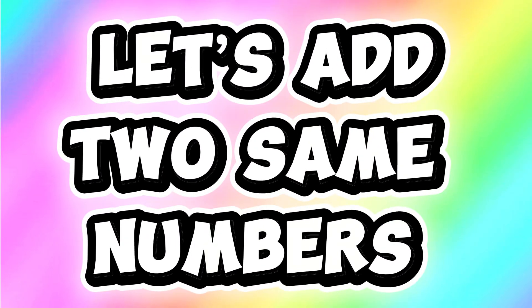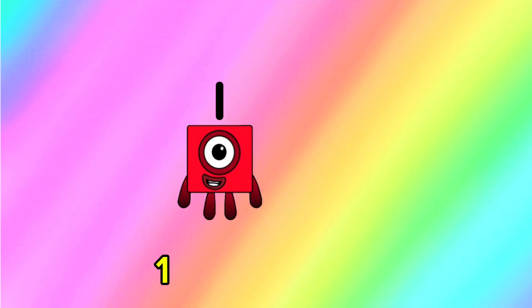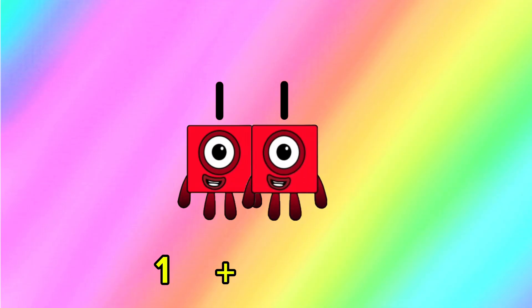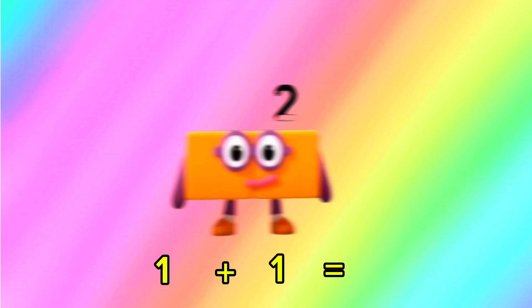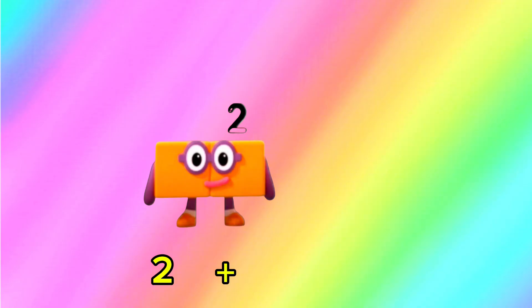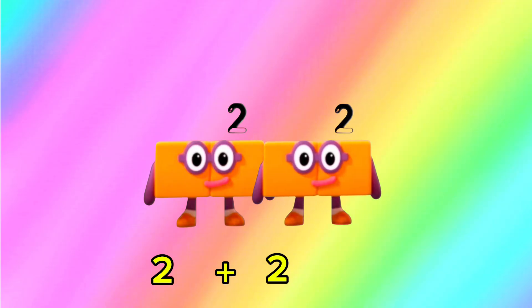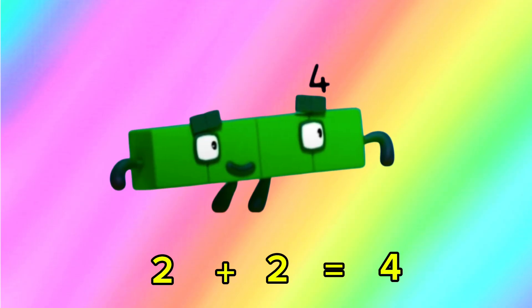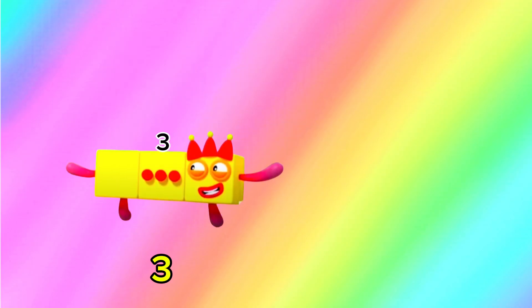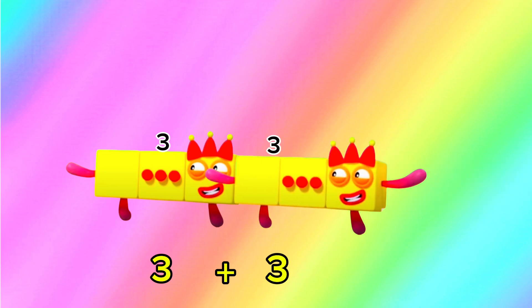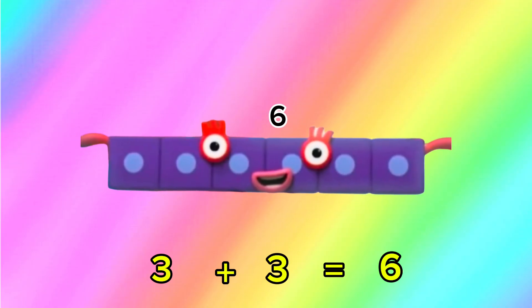Let's add two same numbers. Let's begin. 1 plus 1 is equals to 2. 2 plus 2 is equals to 4. 3 plus 3 is equals to 6.